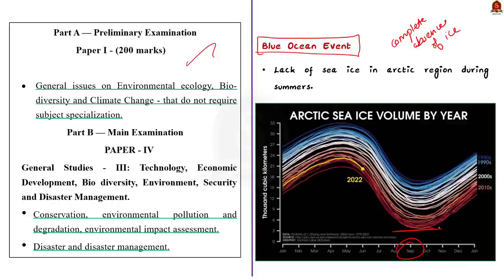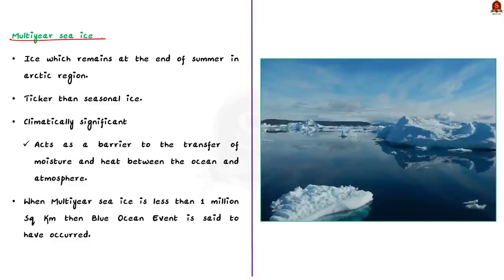Over the past 40 years, this multi-year sea ice has shrunk from around 7 million square kilometers to 4 million square kilometers. Multi-year sea ice is nothing but the ice which remains at the end of each summer. This multi-year sea ice is thicker than other seasonal ice and it plays an important role in combating climate change.